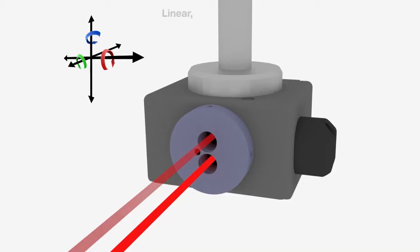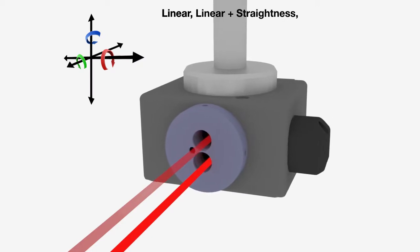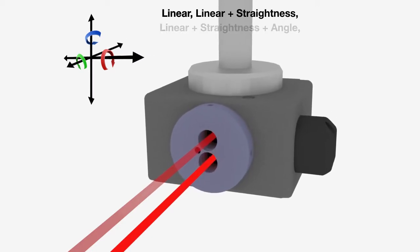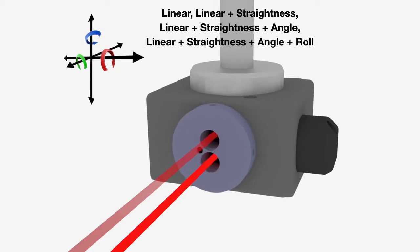The XD1 measures the position of your machine. The XD3 measures straightness. The XD5 measures pitch and yaw, while the XD6 measures roll.